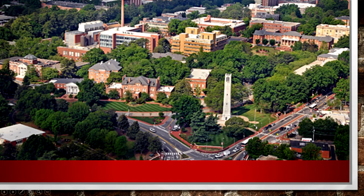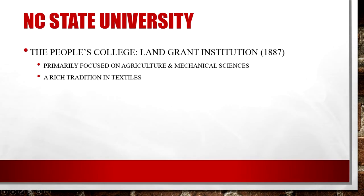Founded in 1887, NC State University is located in Raleigh, North Carolina. Over the years, the campus has become the largest in the state with nearly 40,000 students. The institution was founded as a land-grant college, commonly viewed as the People's University. Its early goals were to spread new agricultural techniques and the mechanical sciences. Early on, the university had a rich tradition in textiles and a heavy concern for rural parts of the state.